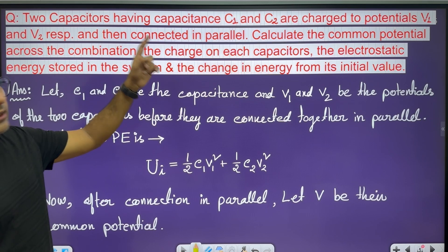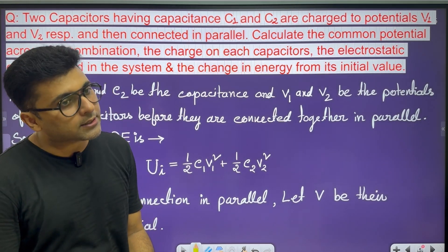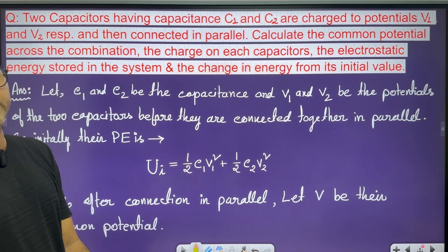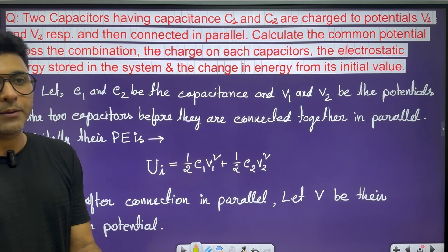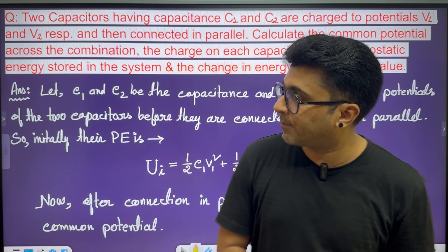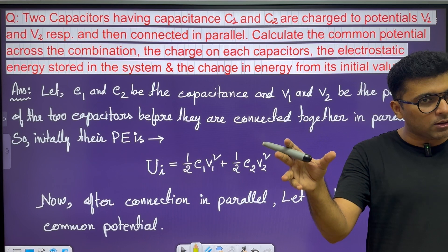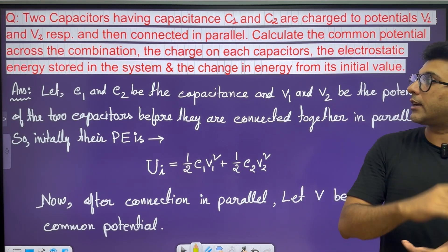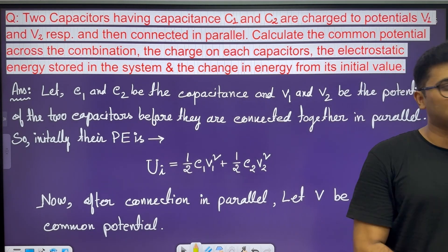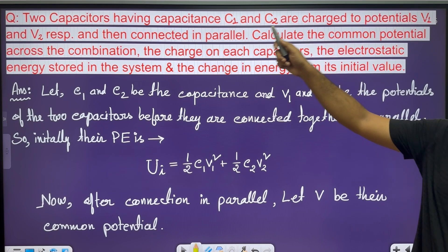The two capacitors have capacitance C1 and C2. The two capacitors are charged to potentials V1 and V2 respectively, then connected in parallel. First, calculate the common potential across the combination.